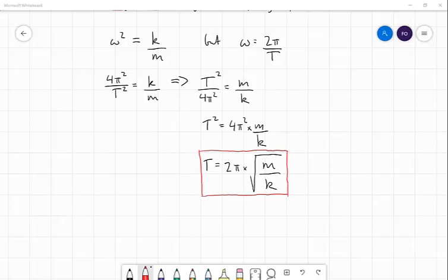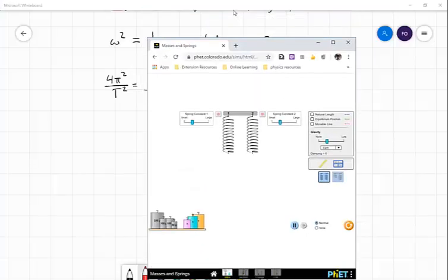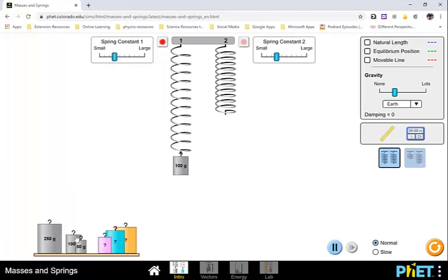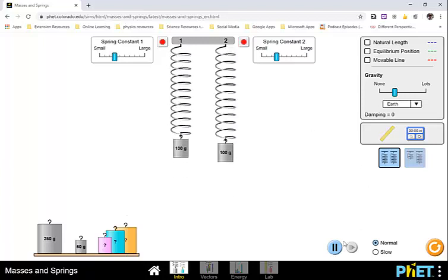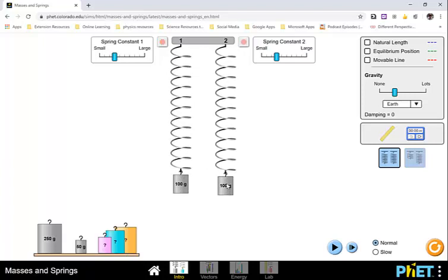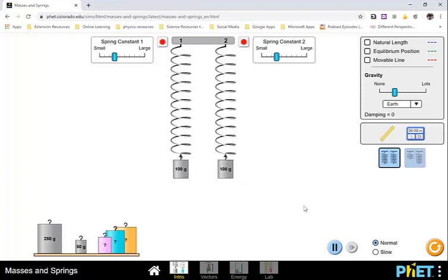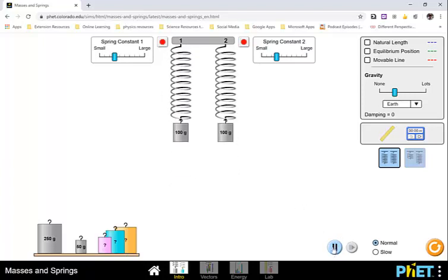Let's just have a look at a simulation that will allow us to observe this happening. So here we have two springs, and at the moment they're set with the same spring constant. What I can do is just take two equal masses and get them bouncing here. I'll just pause it so that I can pull them both down at the same time to the same place. If I hit play here, you can see that they're both bouncing with the same period.